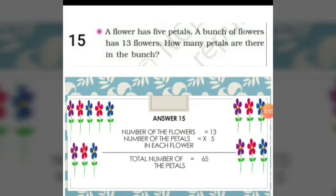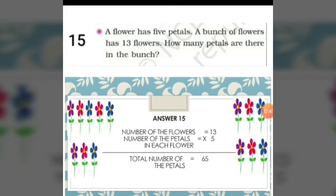15th sum: a flower has 5 petals. A bunch of flowers has 13 flowers. How many petals are there in the bunch? We have to find the total number of petals in 13 flowers. The number of flowers is 13 and the number of petals in each flower is 5. So the total number of petals will be 13 times 5, which is equal to 65. Let us recheck: 13 flowers, 13 times 5 — if we add, we will get the answer 65.